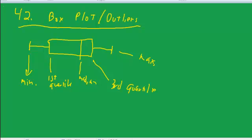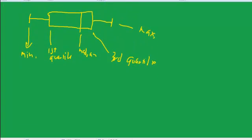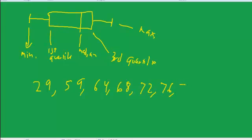To construct a box plot, one of the things you want to do is arrange all the numbers from lowest to highest. So let's say we had a bunch of test scores. We'd want to first arrange them from lowest to highest. So let's say we had 29, 59, 64, 68, 72, 76, 77,